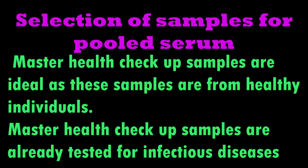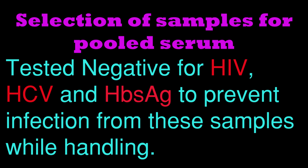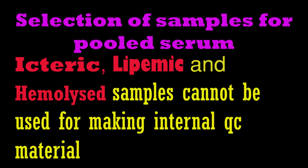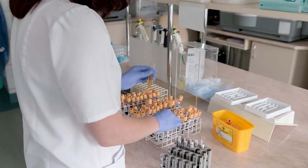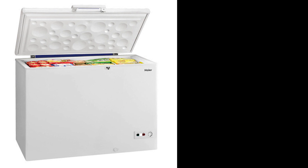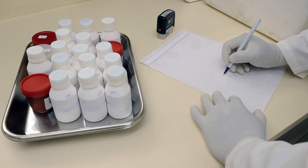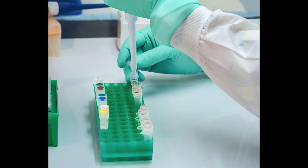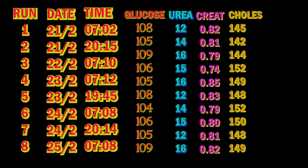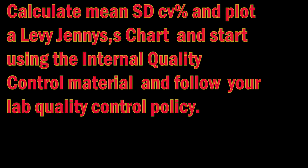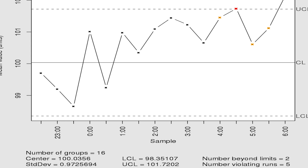How to prepare: in-house internal quality control samples can be prepared from leftover serum samples of master health check-up subjects screened negative for HIV, HCV, and HBsAg antibodies. These samples are pooled in a glass jar with ethanol as preservative and kept in a deep freezer at minus 20 degrees centigrade. From the pooled serum, 100 microlitres are required for two runs of each analyte. Aliquots are prepared. Every day, along with commercial internal QC, one aliquot of pooled serum is analyzed for the next 20 runs, and the mean, standard deviation, and CV percentage values are calculated. This can then be run as internal quality control material with a Levey-Jennings graph.